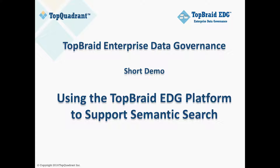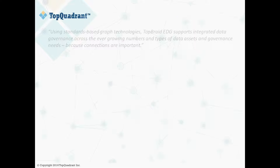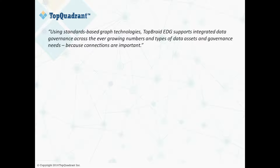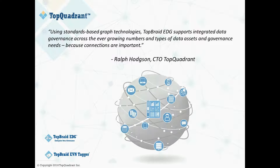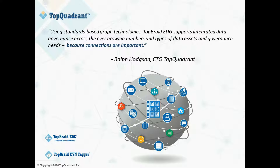One of the greatest challenges that enterprises face today is that information is more critical and strategic than ever before. Without governance systems and the ability to create and maintain vital connections, information is fragmented. Actionable understanding requires that we connect the business, technical, and operational metadata about assets into a single data landscape.